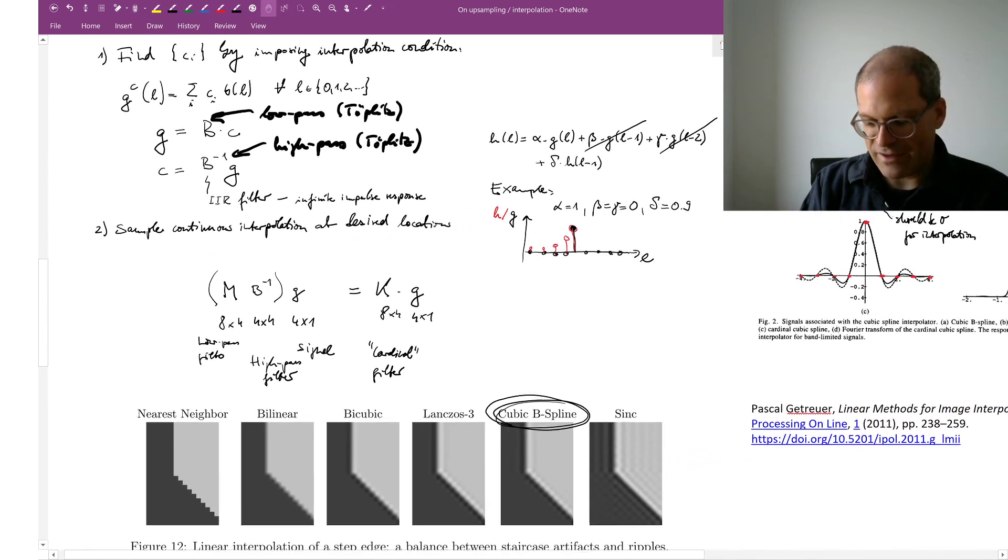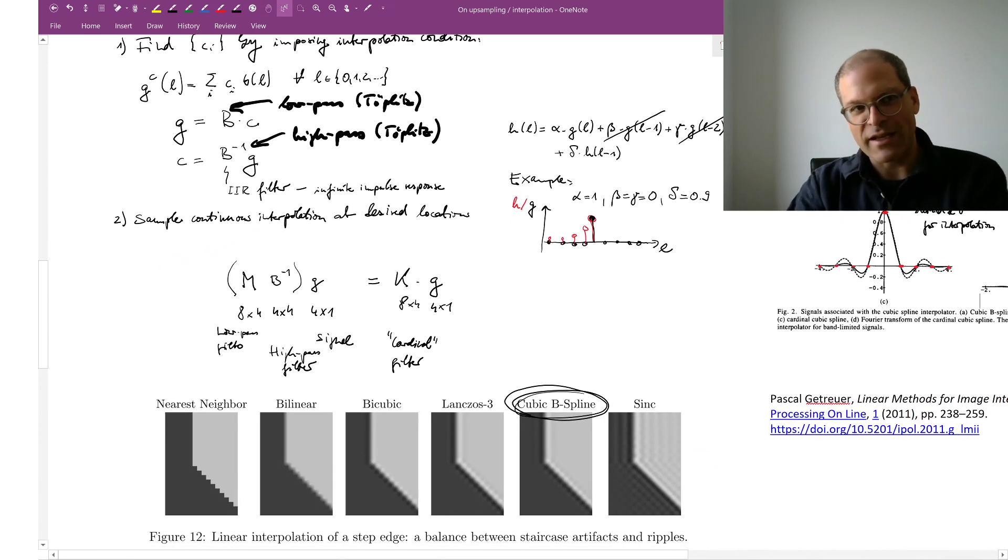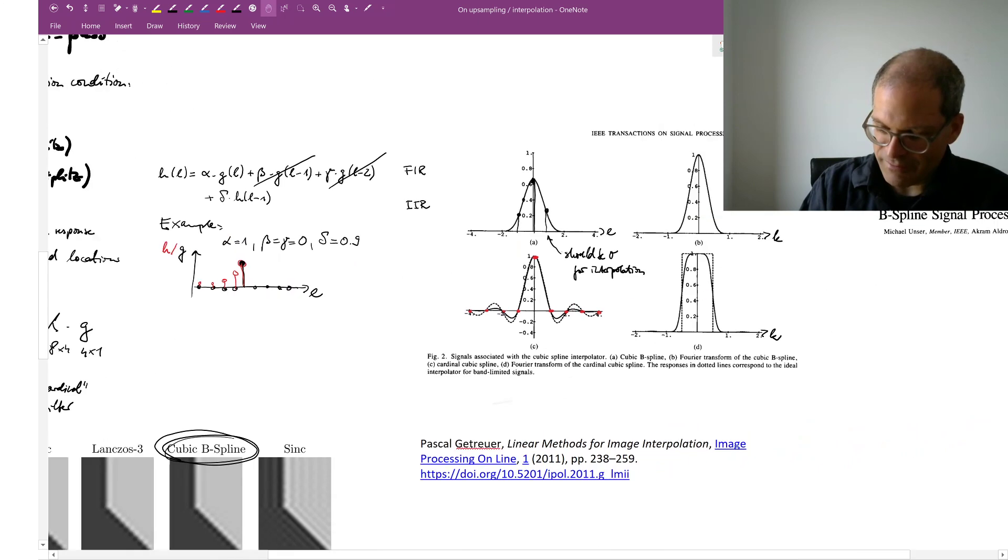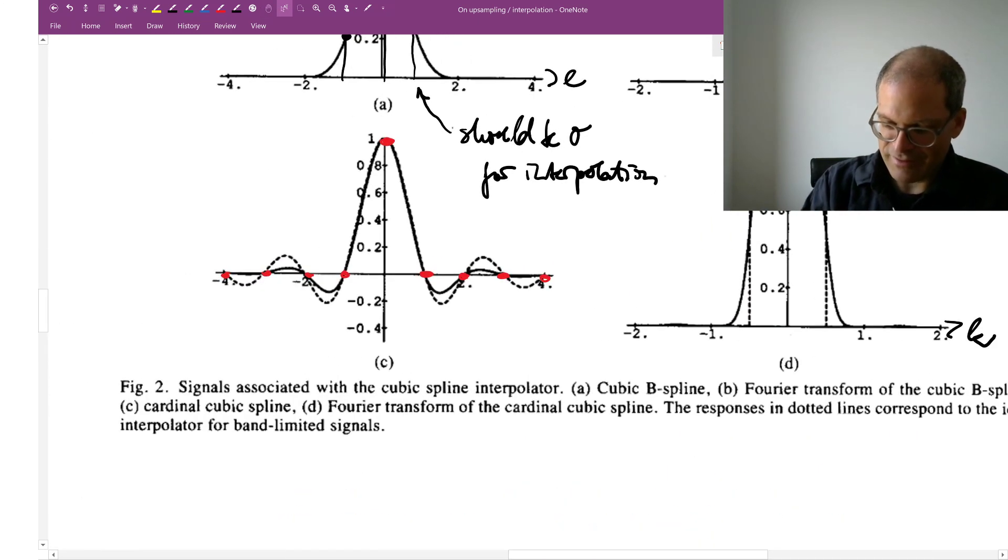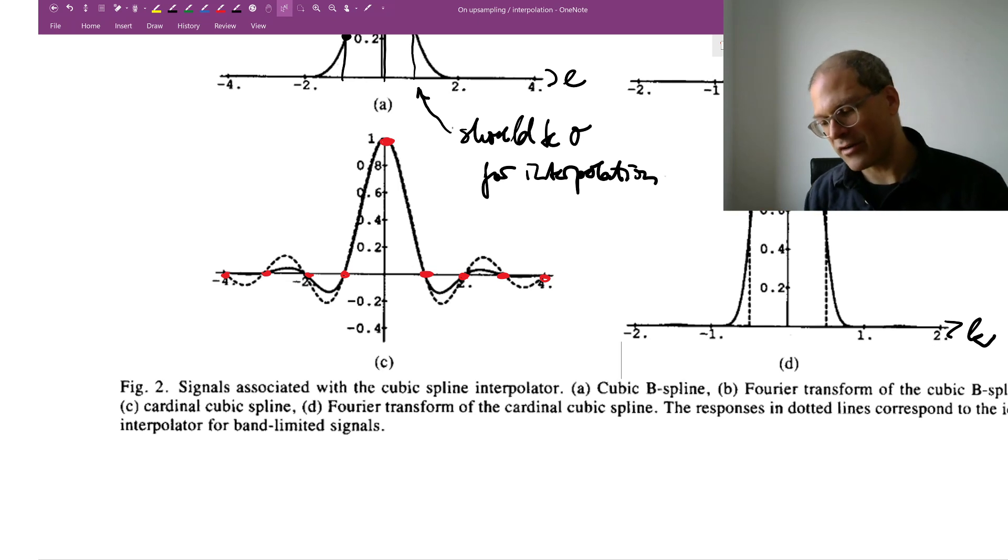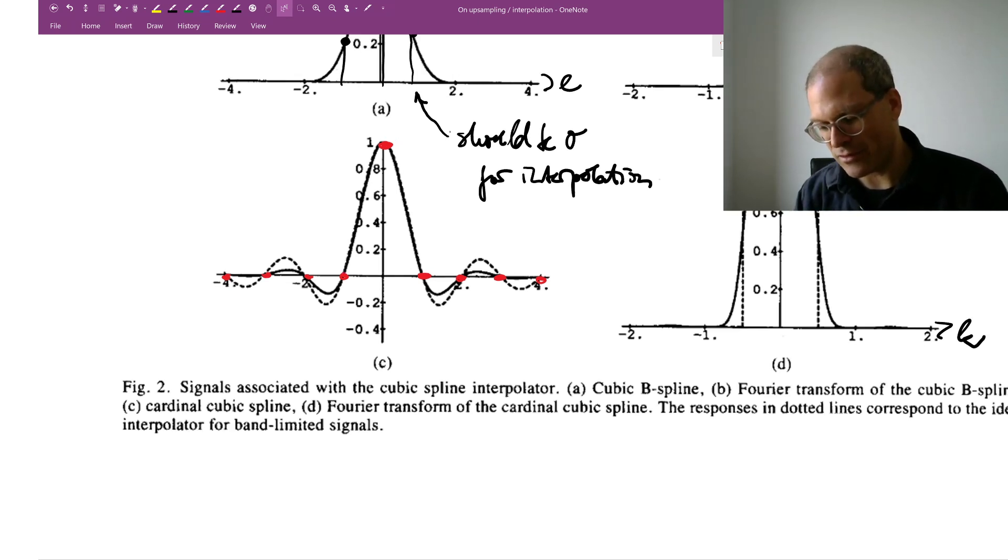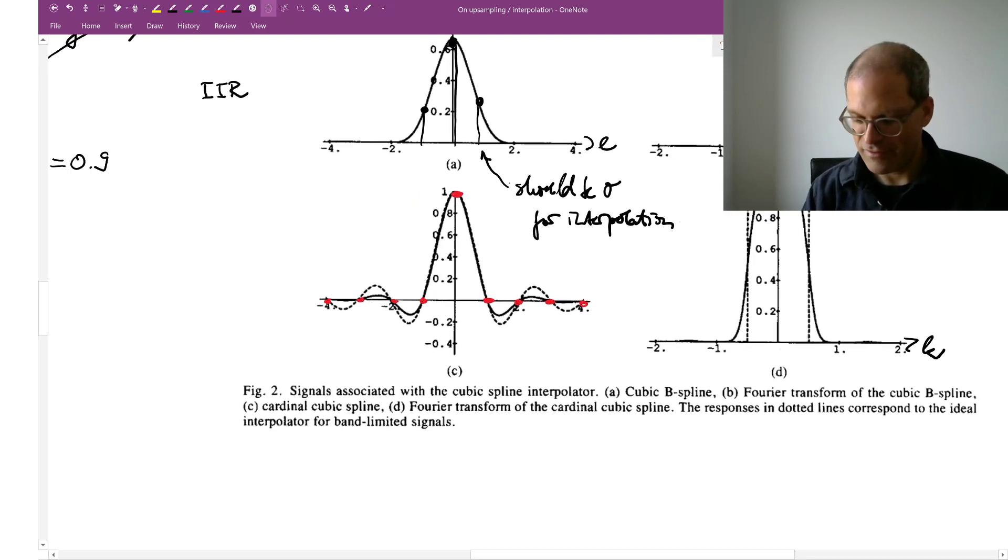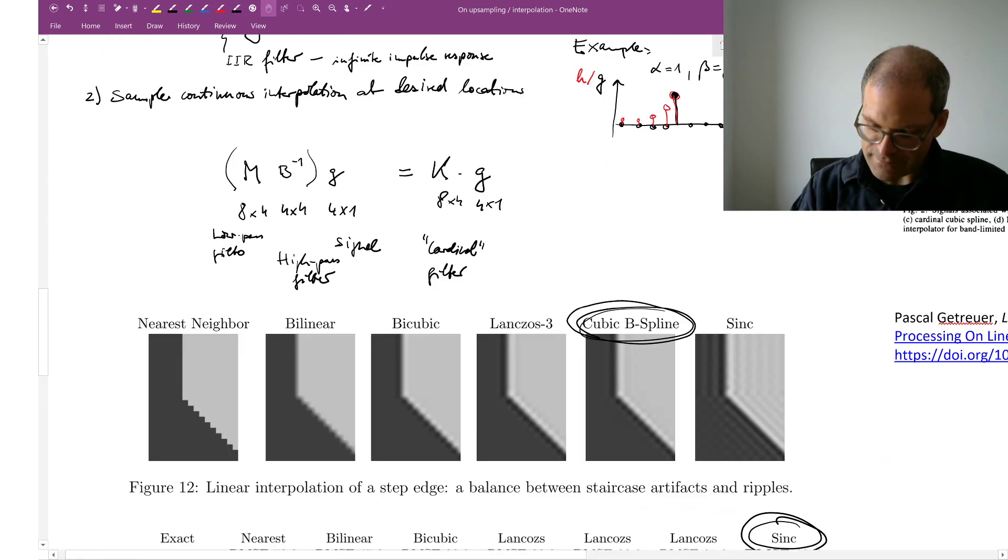Now if on the other hand we want something simple, something that we can give as exercise to you without you having to work on this for a week, then we use something simpler like the Lanczos filter that you've seen or that you are seeing in your exercise. This Lanczos filter also looks like, it's also an approximation to the sinc, except that the Lanczos has strictly finite support. And then we can implement it very simply by means of a FIR, a finite impulse response filtering operation.